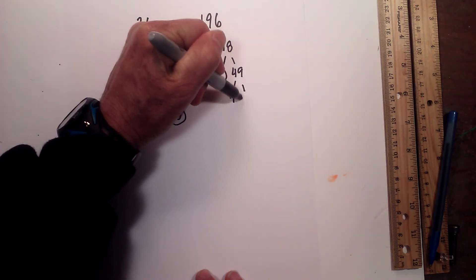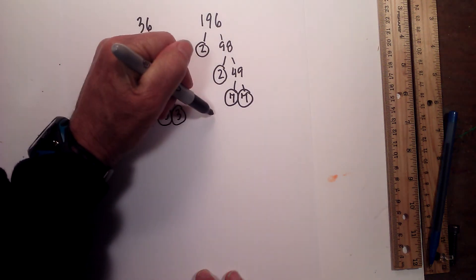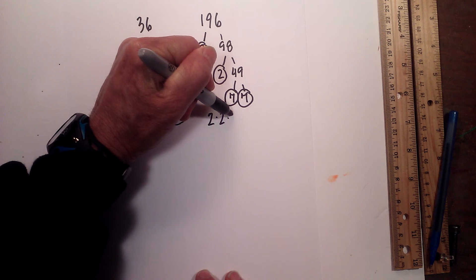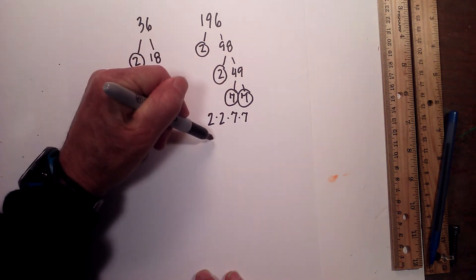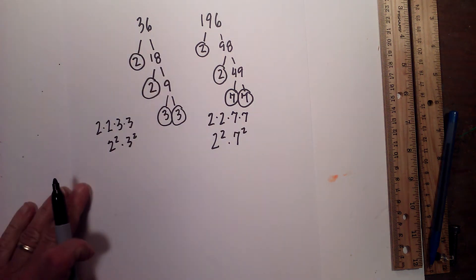And now 7 times 7 equals 49. So the prime factorization of 196 is 2 times 2 times 7 times 7 or 2 squared times 7 squared.